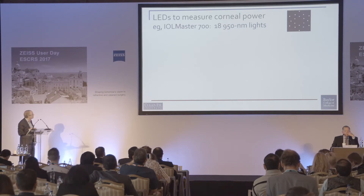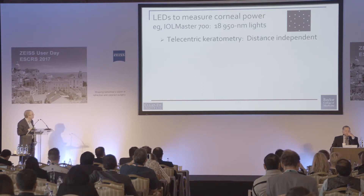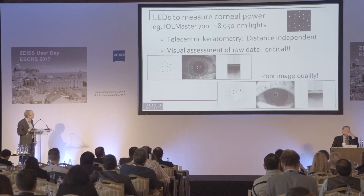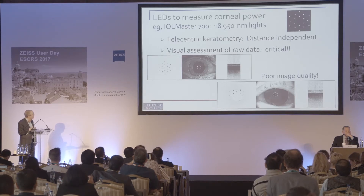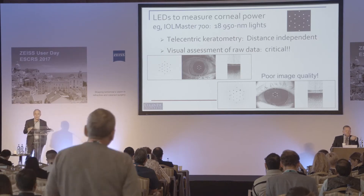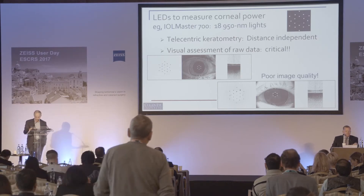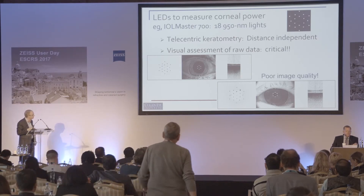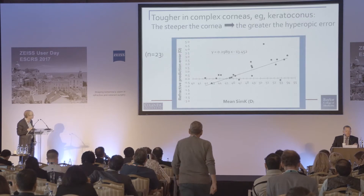The IOL Master 700 has 18 of these 950 nanometer lights, and we've heard about the telecentric keratometry. I'm a big fan of looking at the visual imaging of the reflections of the LEDs — the Mires — and this to me is one of the great qualitative ways that I can judge whether or not I have a good reading on these patients.